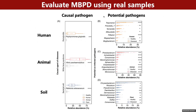Finally, we tested MBPD on paired samples between healthy and diseased individuals for human periodontitis, white-shaped disease, and plant bacterial wilt. To further evaluate the performance of MBPD on real samples, we found that the abundance of pathogens causing disease in diseased samples was remarkably higher than that in the healthy samples.